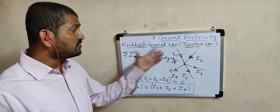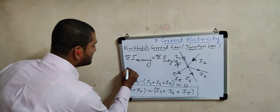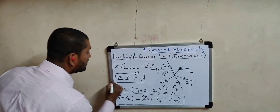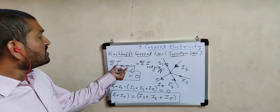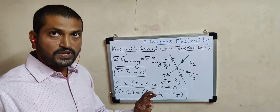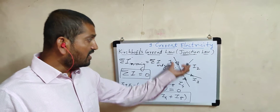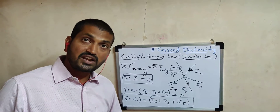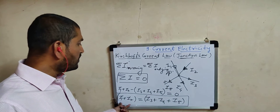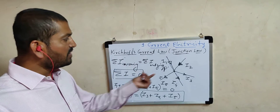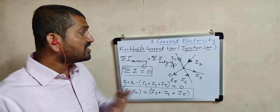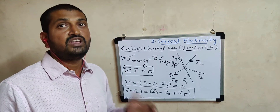To summarize, Kirchhoff's current law has two equivalent statements: the algebraic sum of all currents at any junction is always zero, or equivalently, the sum of incoming currents equals the sum of outgoing currents. Incoming currents are taken as positive and outgoing currents as negative. The application of this law will be discussed while solving numericals. This completes the first law given by Kirchhoff; next we will discuss the second law, which is also called the voltage law.